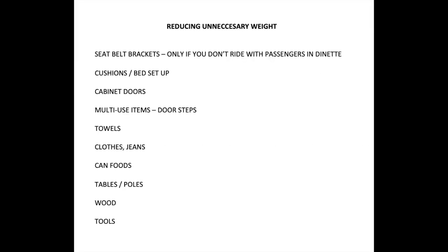What can you do to reduce weight? We found quite a bit actually. There are the seat belt brackets — I'll show you a picture after this of what is under your dinette area, especially in the newer motorhomes. We don't bring passengers and have them sit in our dinette area in our motorhome. There were three of these brackets and they were up close to 30 pounds apiece, so we actually removed them. Other things to look at are cushions and bed setup.